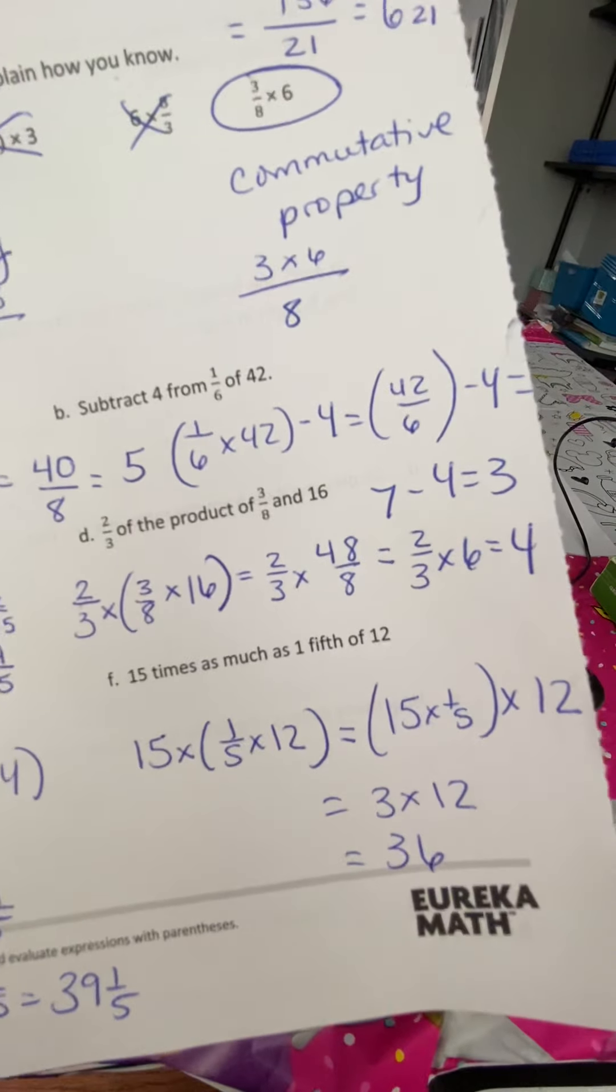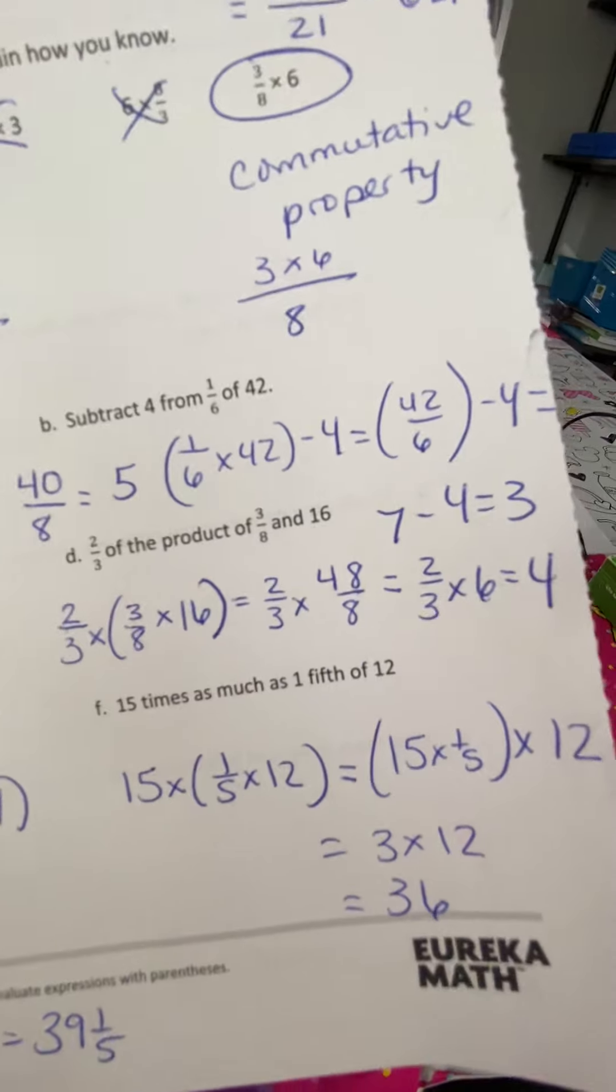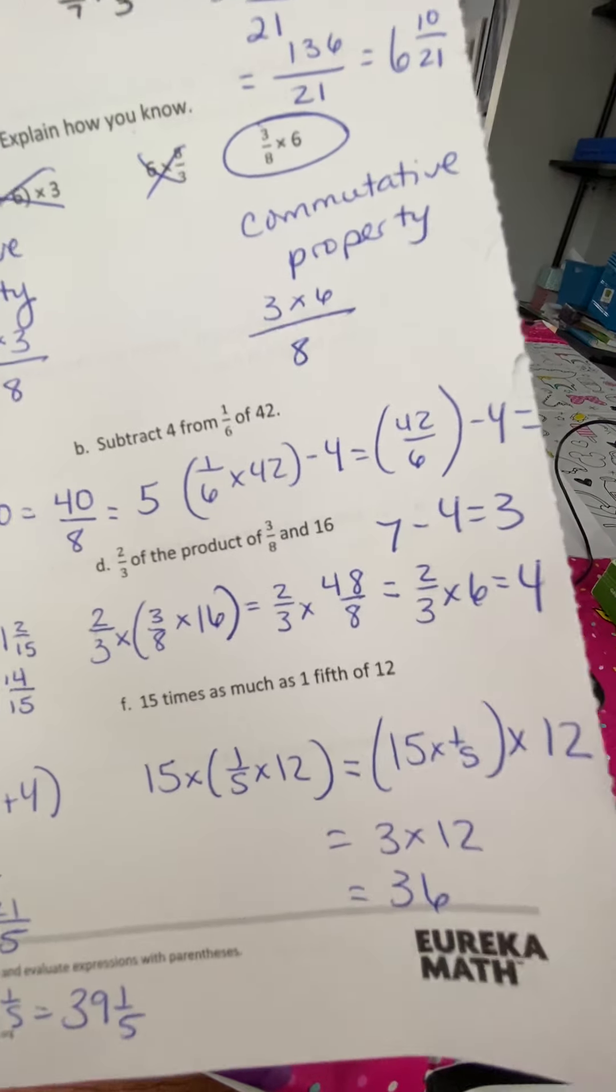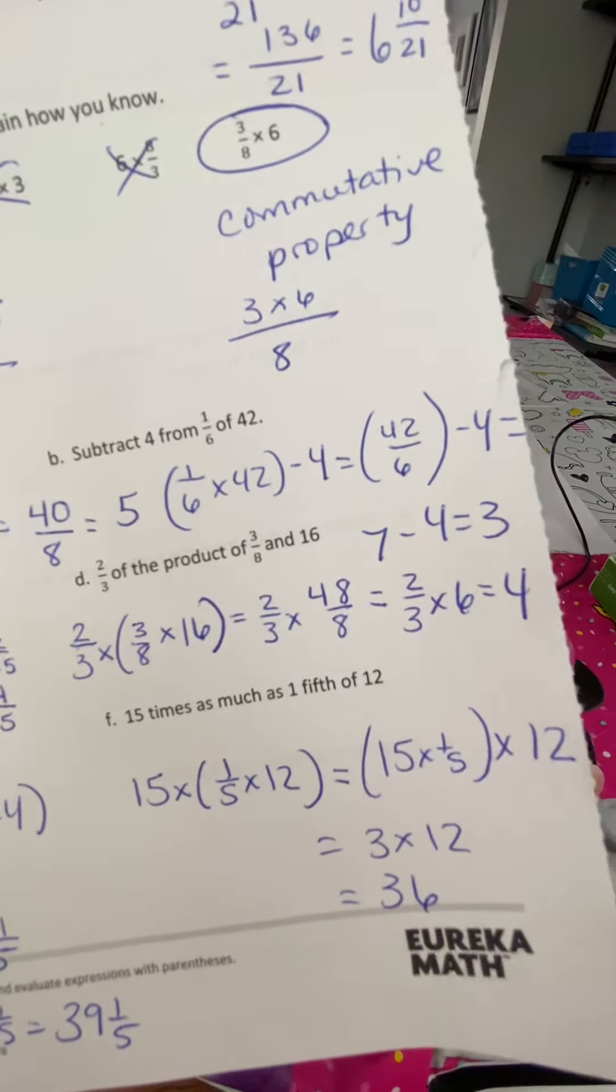Letter D. 2 thirds of the product of 3 eighths and 16. So you want to find the product, which is multiplication of 3 eighths times 16, which basically gets you to 48 over 8. And you're going to multiply that times 2 thirds. What is 2 thirds times 6? It is 4.